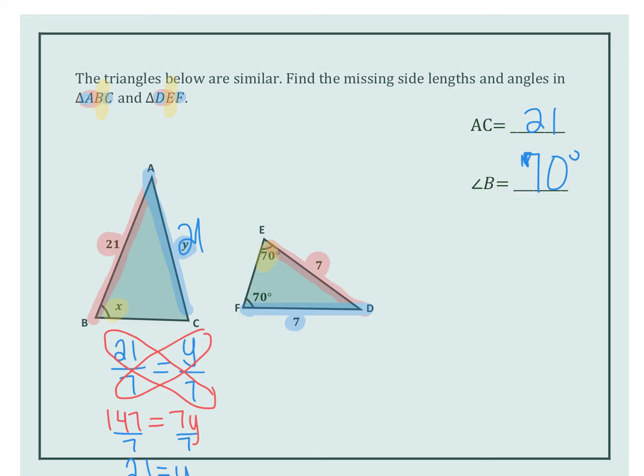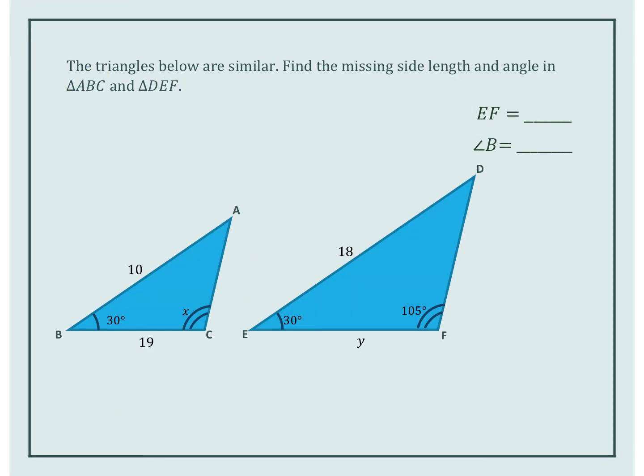Good job. Let's do our last problem of the day. The triangles below are similar. Find the missing side length and angle in these triangles.